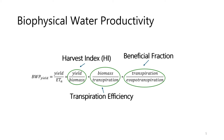Yield, biomass, and evapotranspiration are profoundly related to agronomy. If we reformulate the equation of yield water productivity, three important agronomic concepts appear: the harvest index, the transpiration efficiency, and the beneficial fraction.